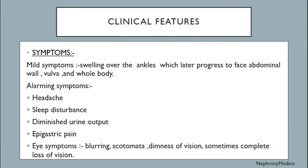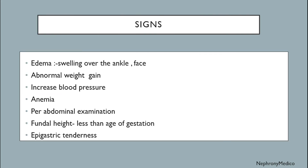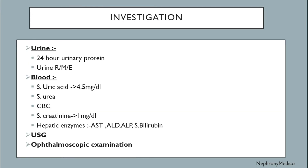Clinical features — symptoms: there may be mild symptoms like swelling over the ankles which later progress to the face, abdominal wall, vulva, and whole body. Or there may be alarming symptoms like headache, sleep disturbance, diminished urine output, epigastric pain, eye symptoms like blurring, scotoma, diminished vision, or sometimes complete loss of vision. Signs include edema, abnormal weight gain, increased blood pressure, anemia, fundal height less than dates of gestation, and epigastric tenderness.